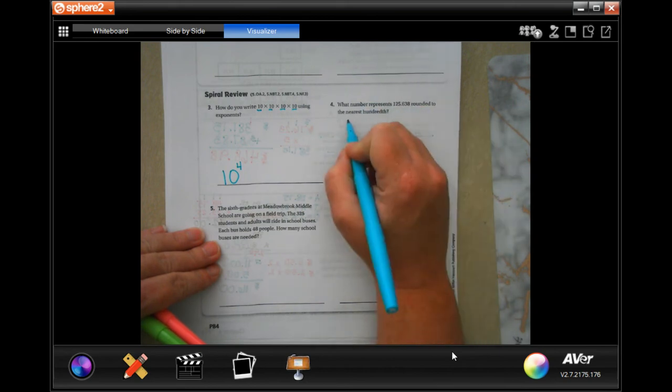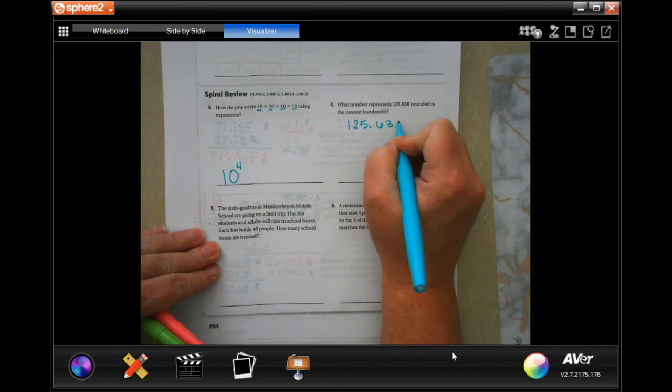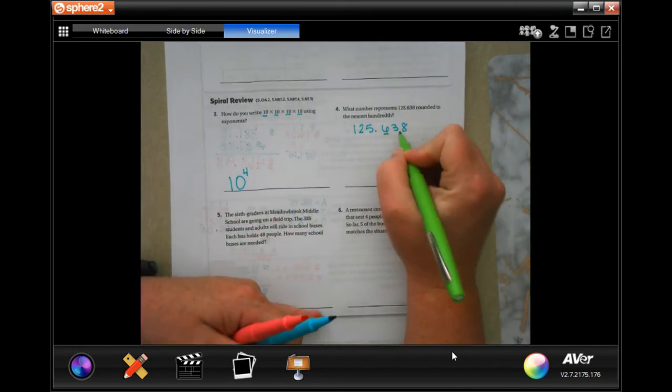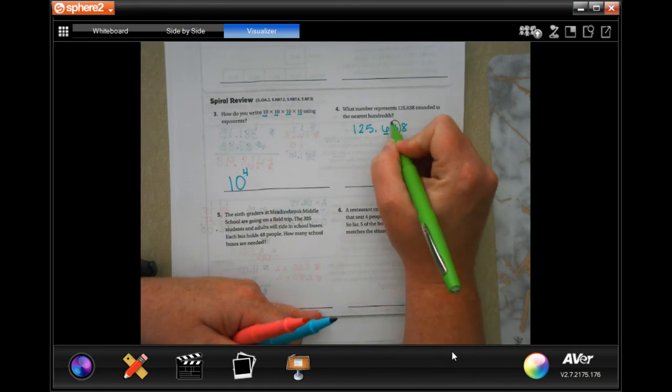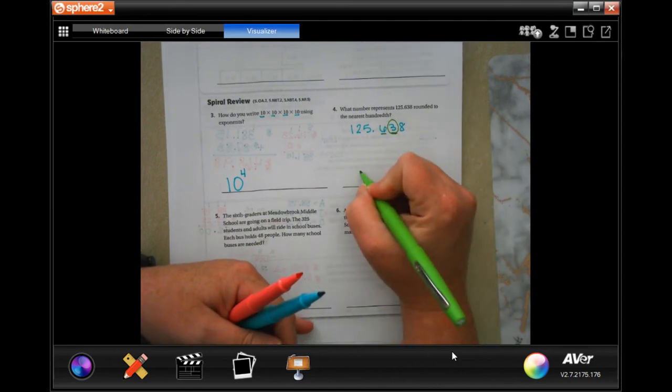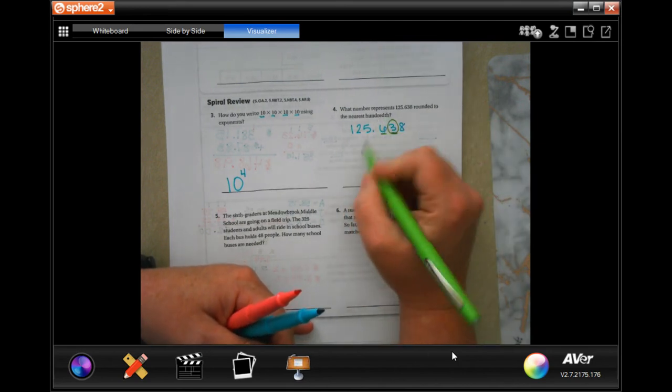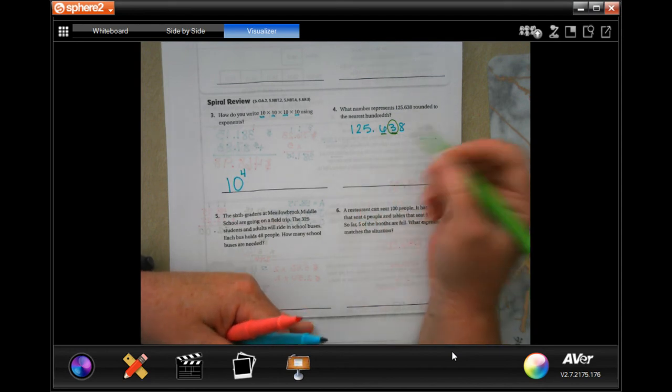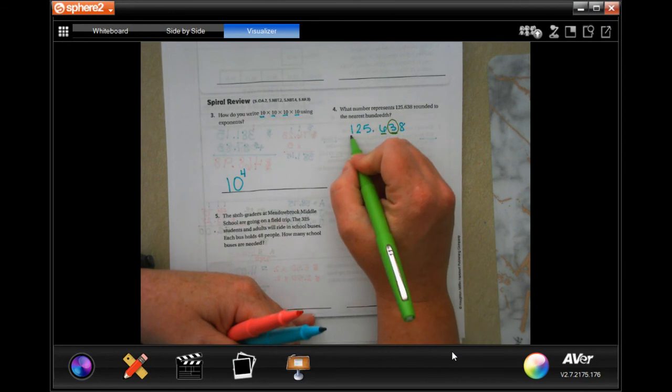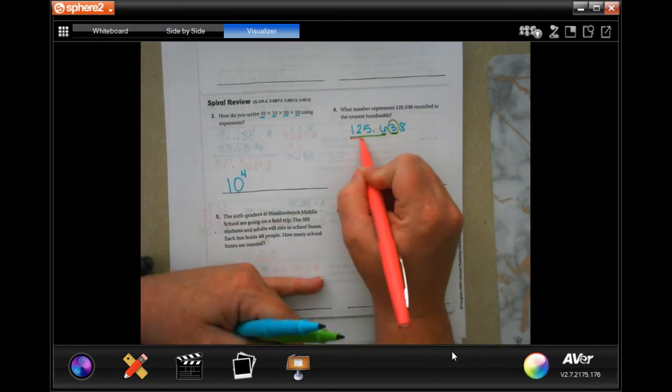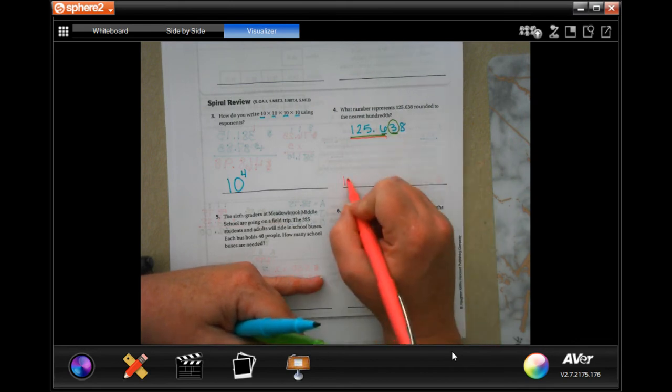What number represents 125.638 rounded to the nearest hundredth? Well, let me rewrite this so that we can see it a little bit bigger here. This is the tenth, this is the hundredth. So we're going to round to that, so all the numbers before that stay the same.